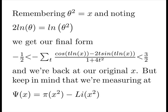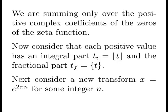And we're back at our original x. But keep in mind that the whole time we're measuring our psi of x at pi of x squared minus the log integral of x squared. We're summing only over the positive complex coefficients of the zeros of the zeta function. Now consider that each positive value has an integral part T sub i, the floor of T, and a fractional part T sub f, written with braces.